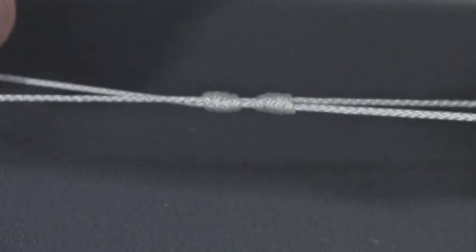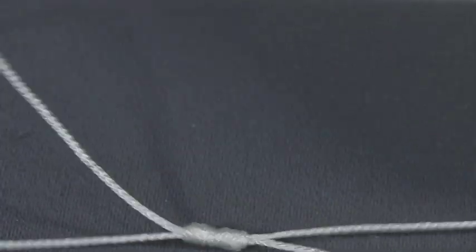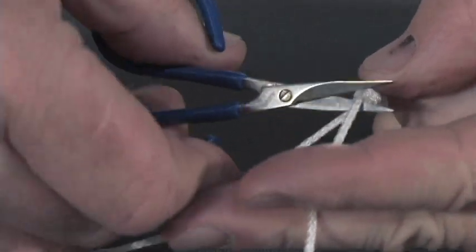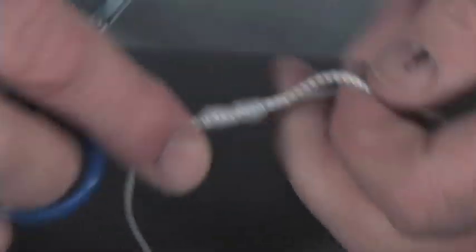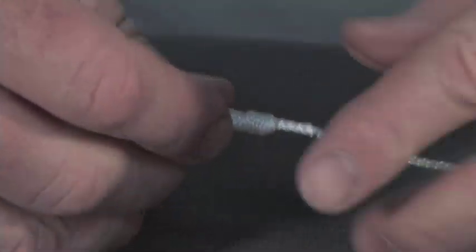Pull on all four ends, which will tighten the knots up and bring them back together, and then you can clip your tag ends off. And there's a double uni knot.